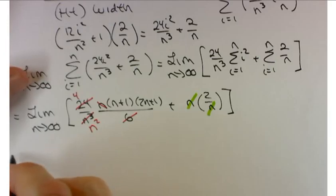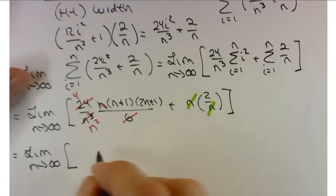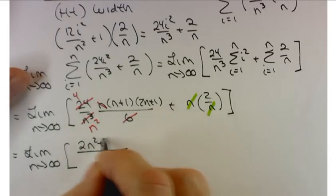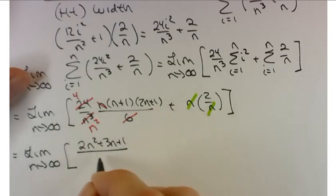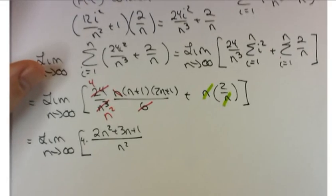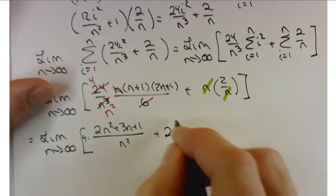So what am I left with? I'm left with the limit as n approaches infinity of, let's see, foiling that out, that'd be 2n² plus 3n plus 1 over n². I still have a 4 out in front here, right? 4 times that plus 2.